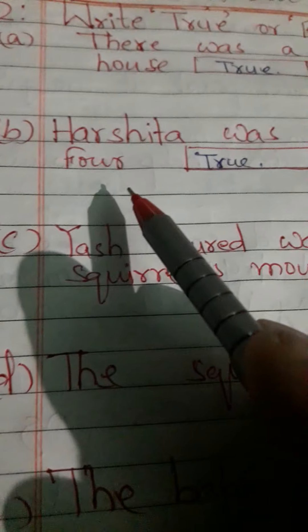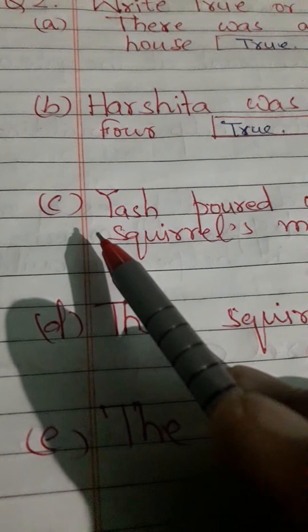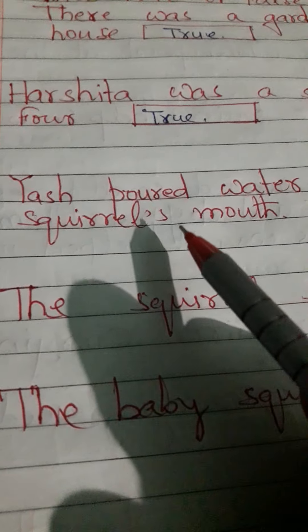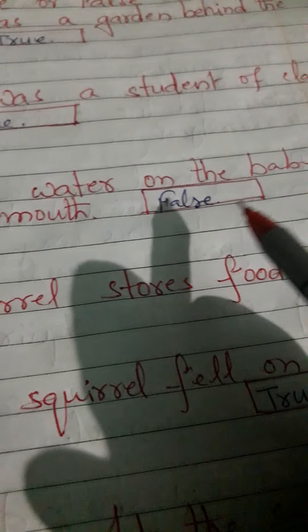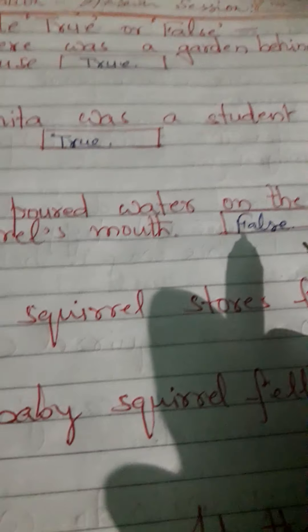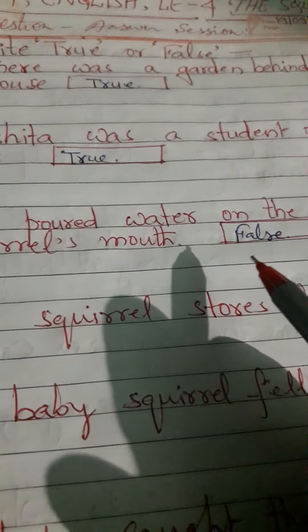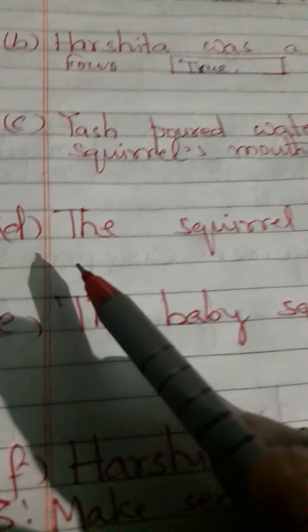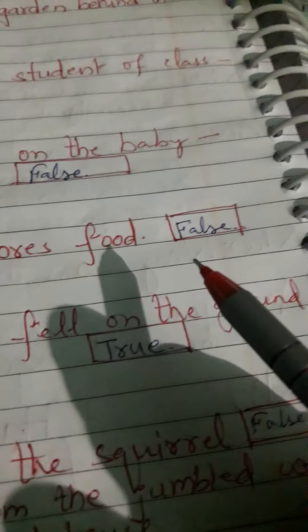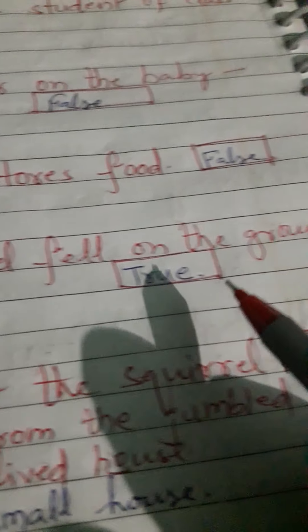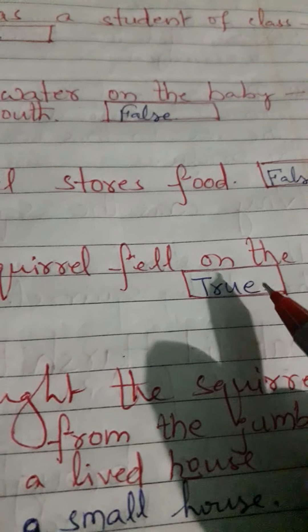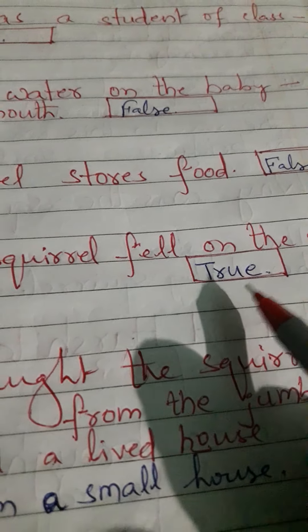Second: Harshita was a student of class 4. This is also true. Question C: Poured water on the baby squirrel's mouth. False — because Harshita had poured water into the baby squirrel's mouth. D: The squirrel stood for food. False. E: The baby squirrel fell on the ground. True — baby squirrel bhoomi pe gir gaya tha.